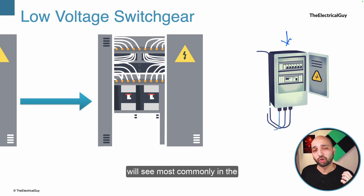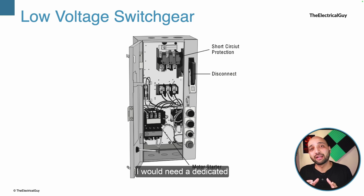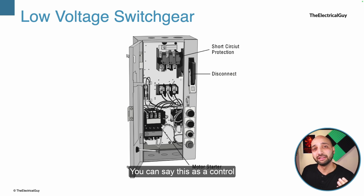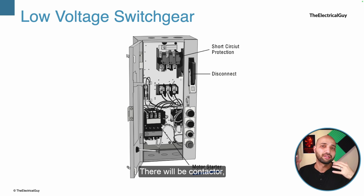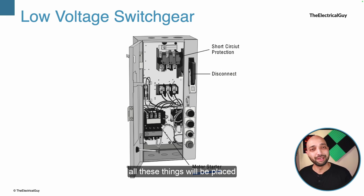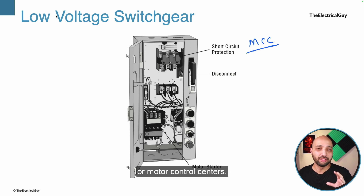Another common element in low voltage switchgear is the Motor Control Center or MCC. In a building there will be motors performing necessary functions, requiring dedicated control. This is sometimes clubbed with the low voltage switchgear, though it is more accurately categorized as control gear. An MCC contains motor starters such as a DOL starter, MCBs to control short circuit currents, contactors, indication systems, and more. All these are placed inside this panel, which is responsible for controlling all the motors in the building.